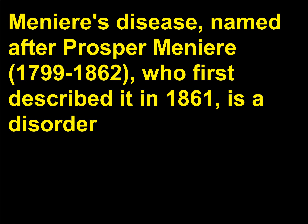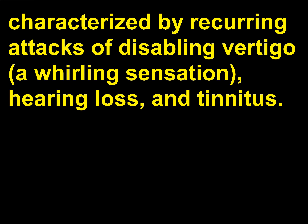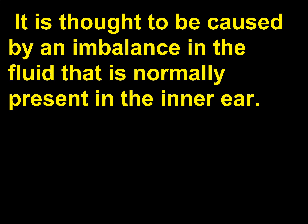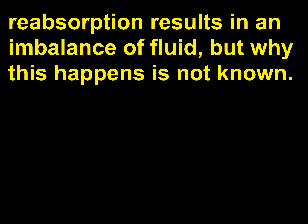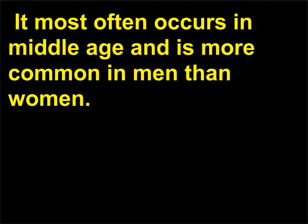What is Meniere's disease? Meniere's disease, named after Prosper Ménière (1799–1862), who first described it in 1861, is a disorder characterized by recurring attacks of disabling vertigo — a whirling sensation — hearing loss, and tinnitus. It is thought to be caused by an imbalance in the fluid normally present in the inner ear. Either an increase in production of inner ear fluid or a decrease in its reabsorption results in a fluid imbalance, but why this happens is not known. It most often occurs in middle age and is more common in men than women.